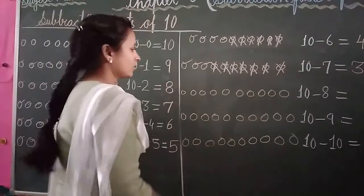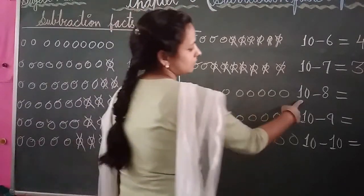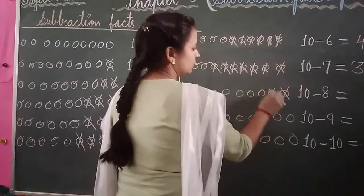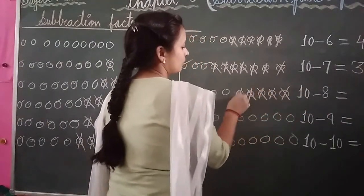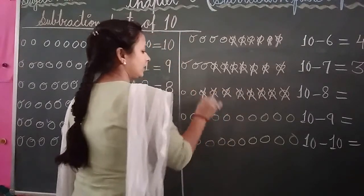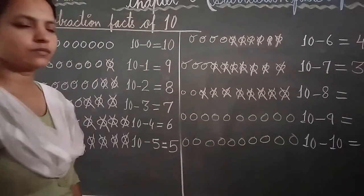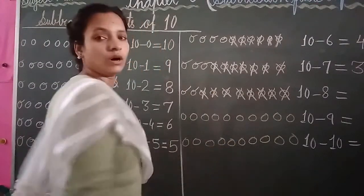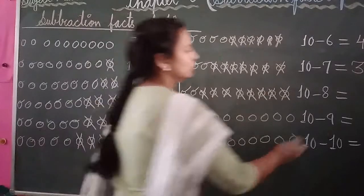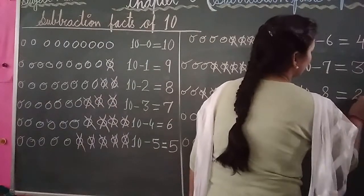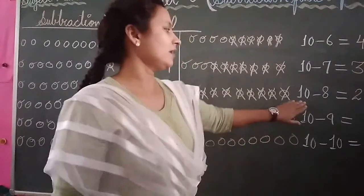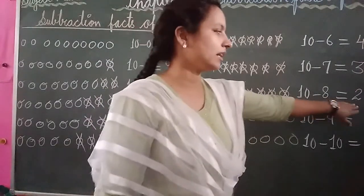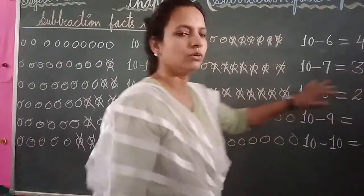Again draw your 10 balls. Write: 10 minus 8. Cross out 8 balls: 1, 2, 3, 4, 5, 6, 7, 8. Count the balls left: 2. How many balls are left? 2. Write your number: 2. The answer is 2. 10 minus 8 equal to 2.